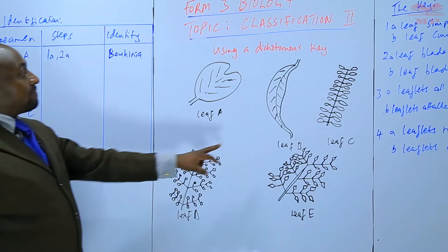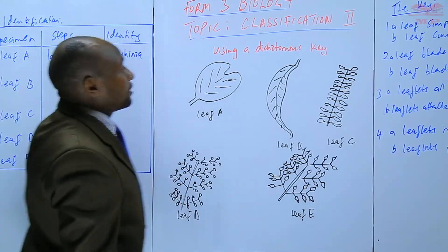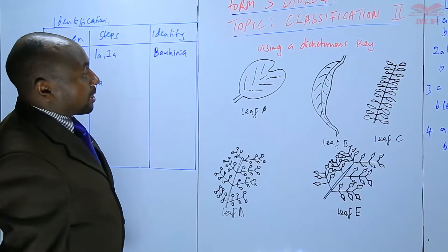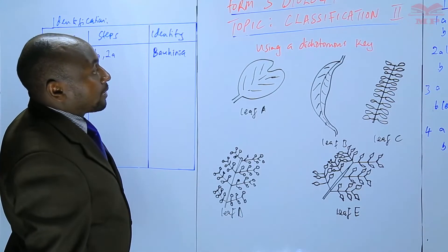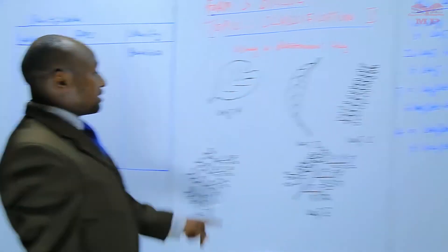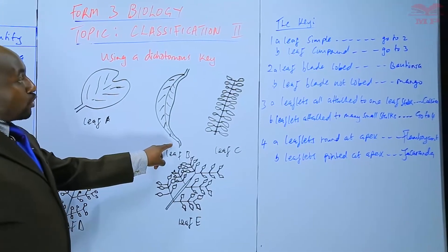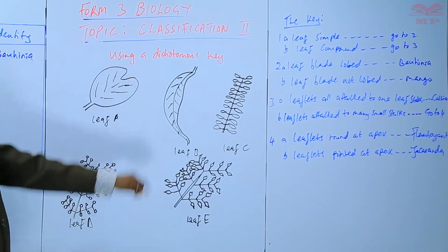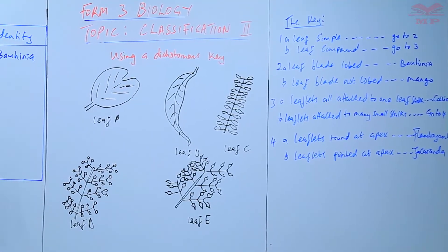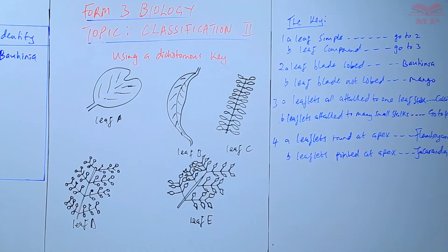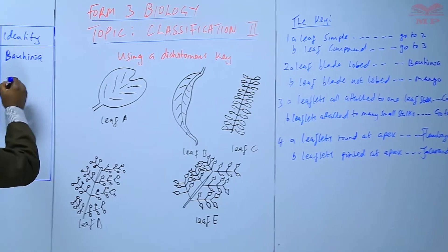For leaf B, it is also a simple leaf, so step 1a, go to 2. Leaf blade lobed or leaf blade not lobed — the leaf blade is not lobed, it is not divided like in leaf A's case. So that is step 2b, and 2b tells us that is a leaf from Mango.